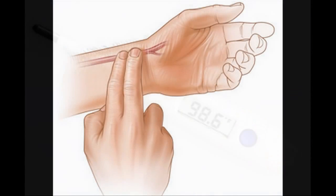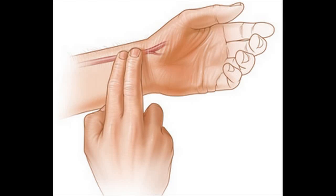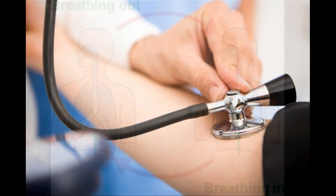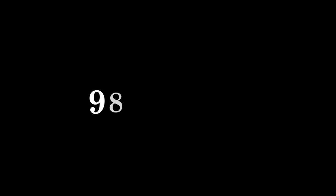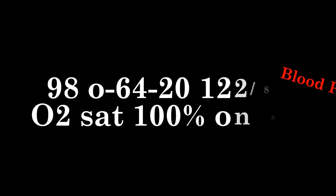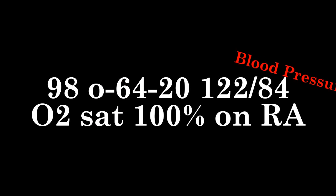Going to do temperature, pulse rate, and respiration. It's going to be 98.0 oral, 64, 20. Then you're going to do the O2SAT, and we're going to say it's at 100% on RA — that's capitalized. RA stands for room air.